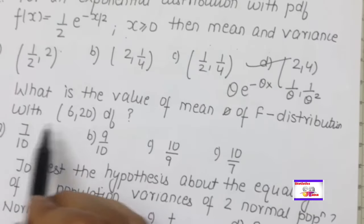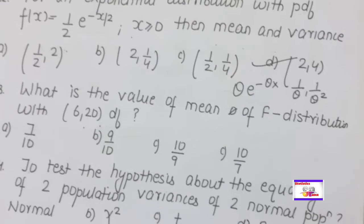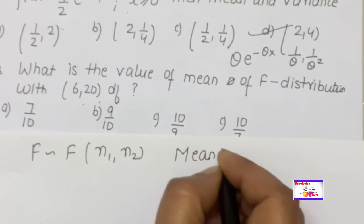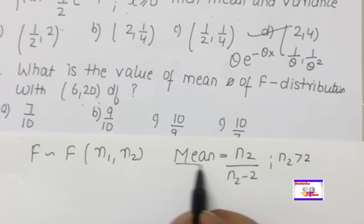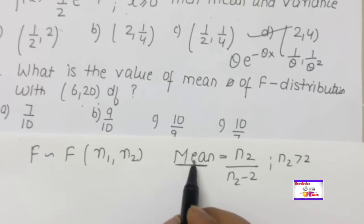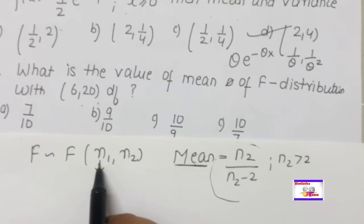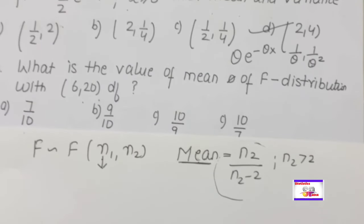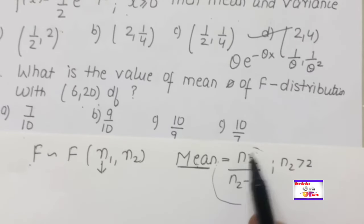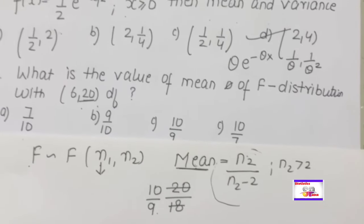What is the mean of the F-distribution with given degrees of freedom? Two important properties of the F-distribution: (1) The mean formula is N₂/(N₂ − 2). (2) The mean is independent of the first degree of freedom N₁ — a commonly asked fact. With N₂ = 20, mean = 20/(20 − 2) = 20/18 = 10/9. The answer is 10/9.